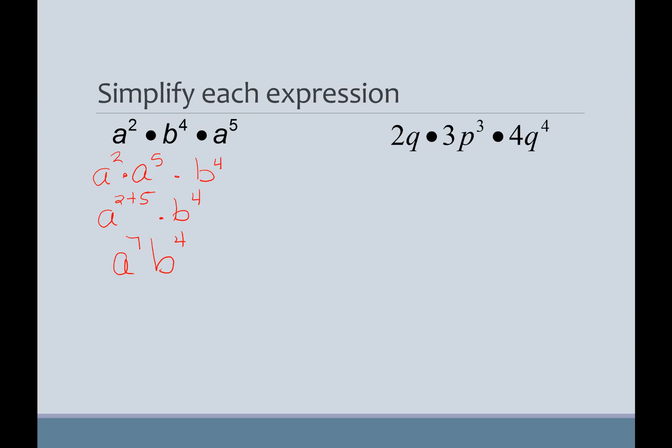And I really don't need to have that multiplication sign in between. Because, remember, when variables are right next to each other, it means multiplication. In this example, I've got a lot of different things going on to regroup. So, I'm going to regroup the 2 times the 3 times the 4. P is just by itself, P cubed. And then I've got Q and Q to the fourth.